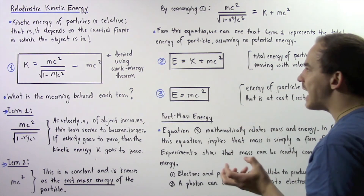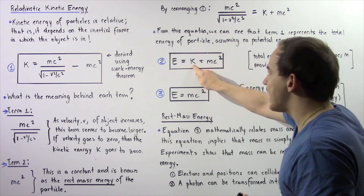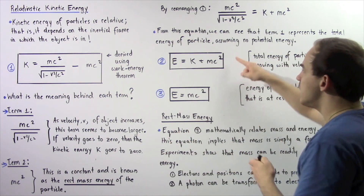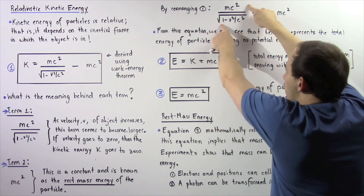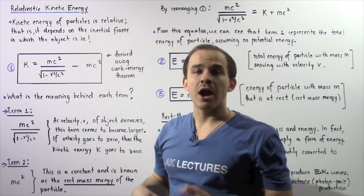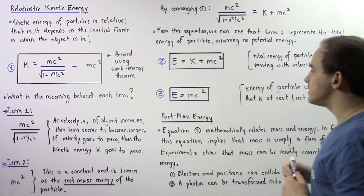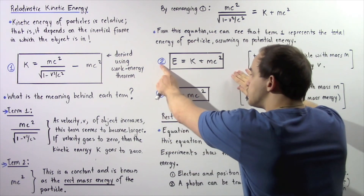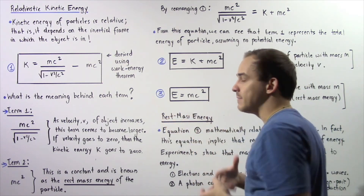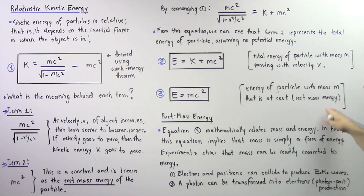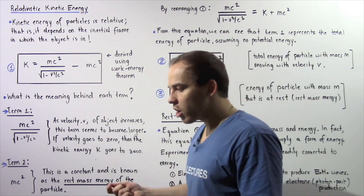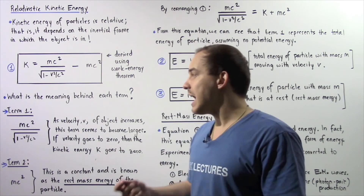If our particle has velocity v, it will have kinetic energy K. Adding that kinetic energy to the rest mass energy gives the total energy E. Now, what happens if the velocity of our particle goes to 0? If velocity goes to 0, the K term also goes to 0, and we get the famous Einstein equation: E equals mc squared. This equation gives us the energy of a particle of mass m that is stationary — at rest — and this is known as the rest mass energy.